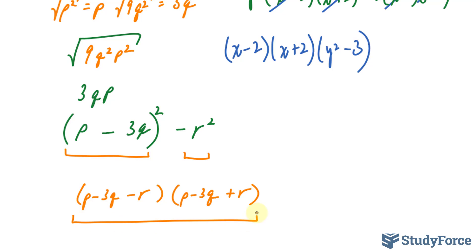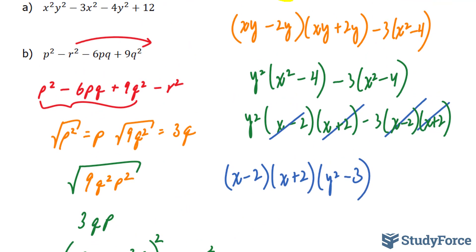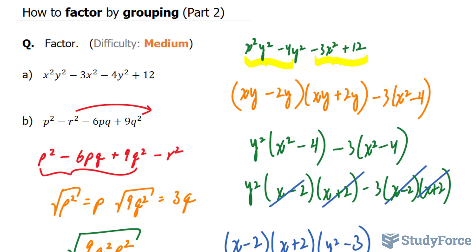This expression represents the factored version of question b, and that is how to factor by grouping. In part 3, I'll show you two more examples that are considered harder than these two.